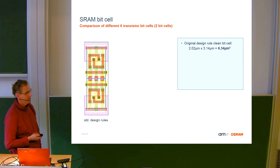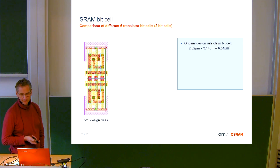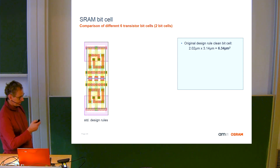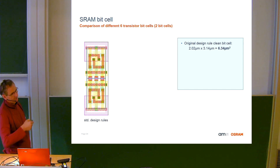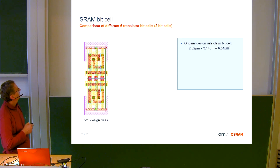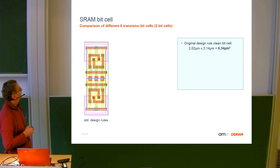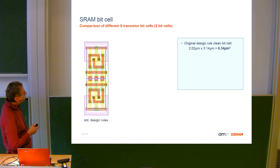The more you squeeze down one bit cell, the larger the building blocks you can create. This is a standard six-transistor bit cell. Here we have two bit cells — the upper one and the lower one — to show that typically you build them mirrored to get two bits. The red ones are metal lines, the yellow ones are poly, and the purple one is the deep n-well. The p-MOS transistors are in this range, the n-MOS transistors in this range.